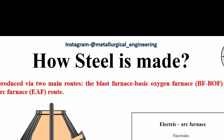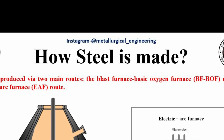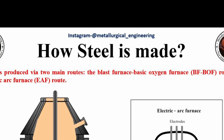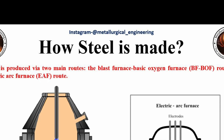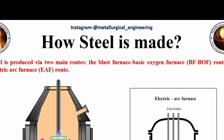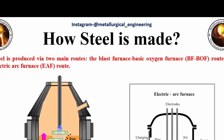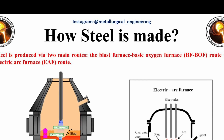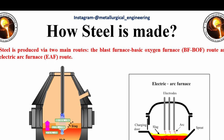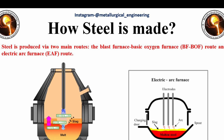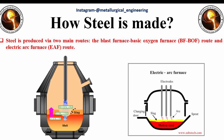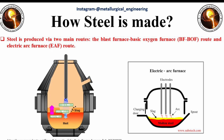The key difference between the routes is the type of raw materials they consume. For the BF-BOF route, these are predominantly iron ore, coal, and recycled steel, while the EAF route produces steel using mainly recycled steel and electricity. Depending on plant configuration and availability of recycled steel, other sources of metallic iron such as direct reduced iron (DRI) or hot metal can also be used in the EAF route.